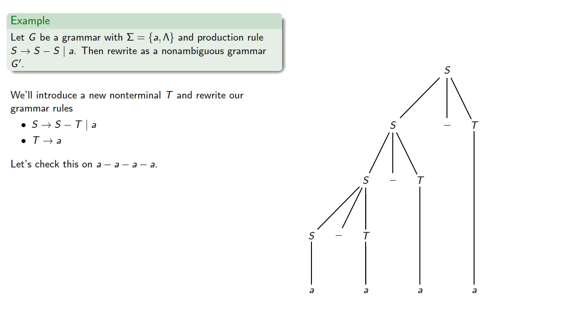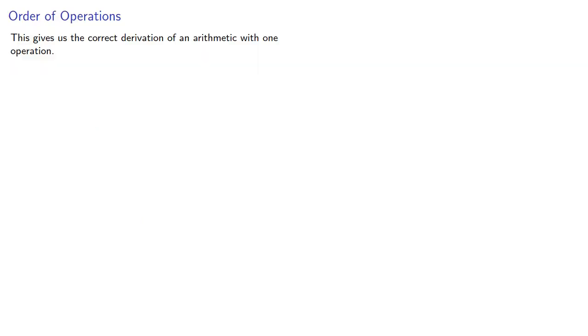So working our way backwards, we'll fill in all of our terminals with a's and we'll evaluate a minus a, that's zero, minus a is negative a, minus a again is negative 2a. And note that under the regular rules of arithmetic, our derivation should give us negative 2a.